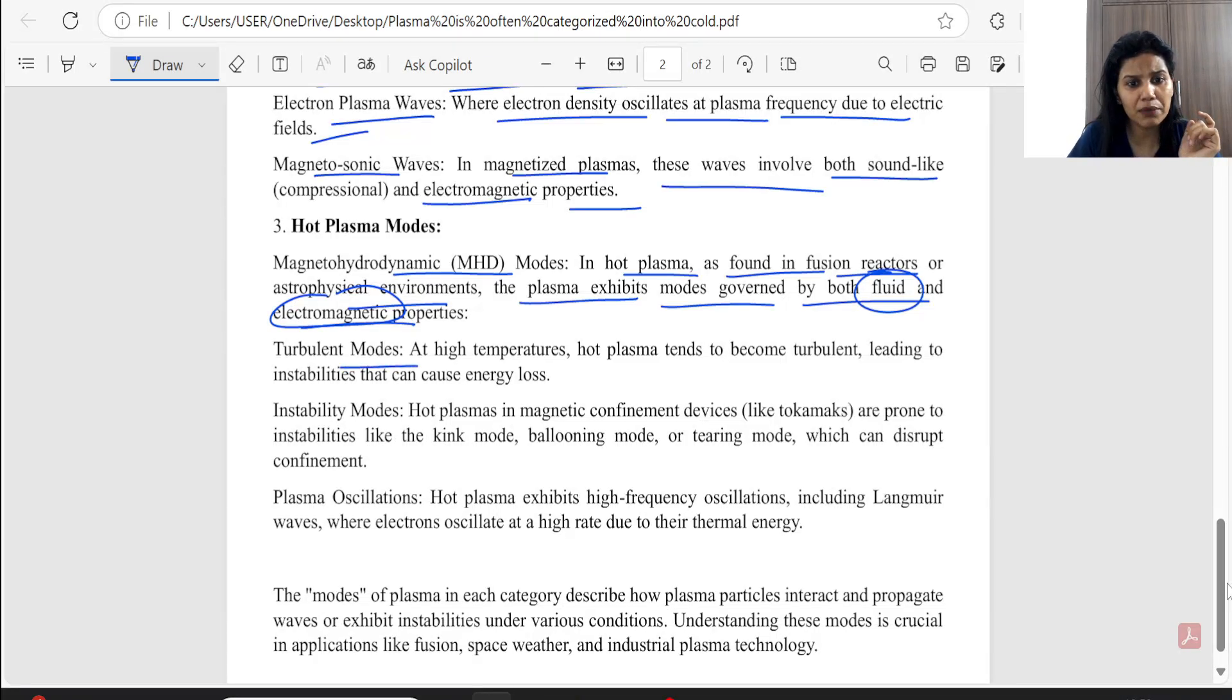This is a turbulent mode. It is a very high temperature. Hot plasma tends to become turbulent, leading to instabilities that can cause energy loss. In-stability mode. Hot plasma in magnetic confinement. This is a hot plasma in magnetic confinement, which is prone to instabilities like the kink mode. This is a kink mode.